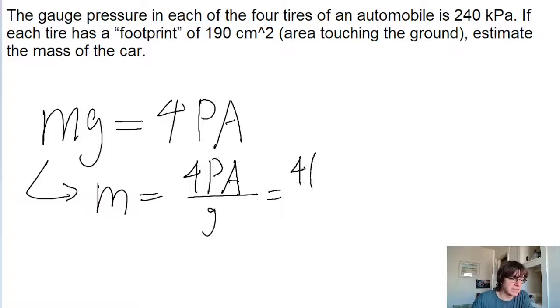So that's four times the pressure, and the pressure exerted by one tire is given as 240 kilopascals. So that's just 2.4 times 10 to the power of 5 pascals.